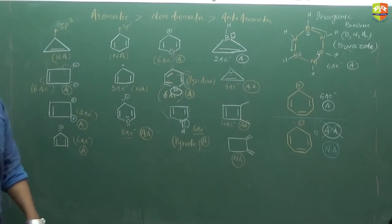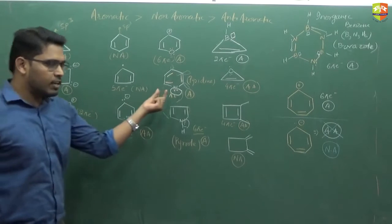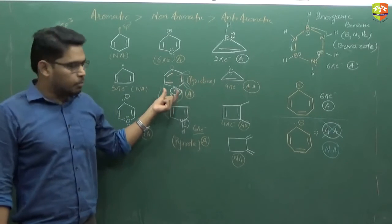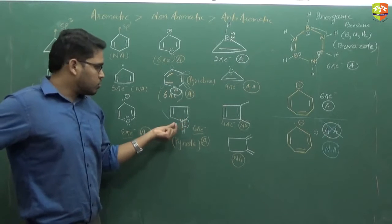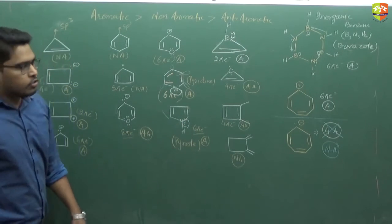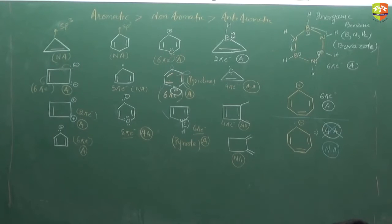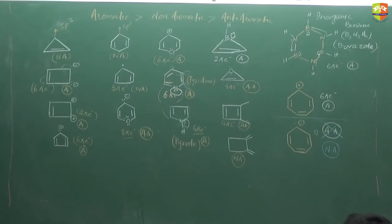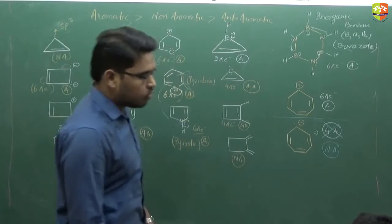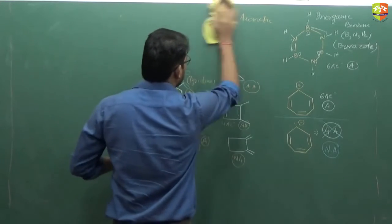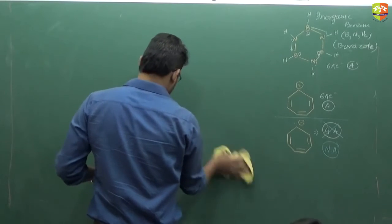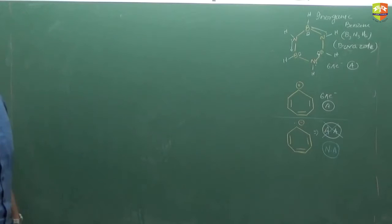If you have to compare the basicity of pyridine and pyrrole: in pyridine the lone pair is available, so it can donate the lone pair — that's the basic nature. So basicity of pyridine is more than that of pyrrole, since the lone pair on the nitrogen atom in case of pyridine is available.